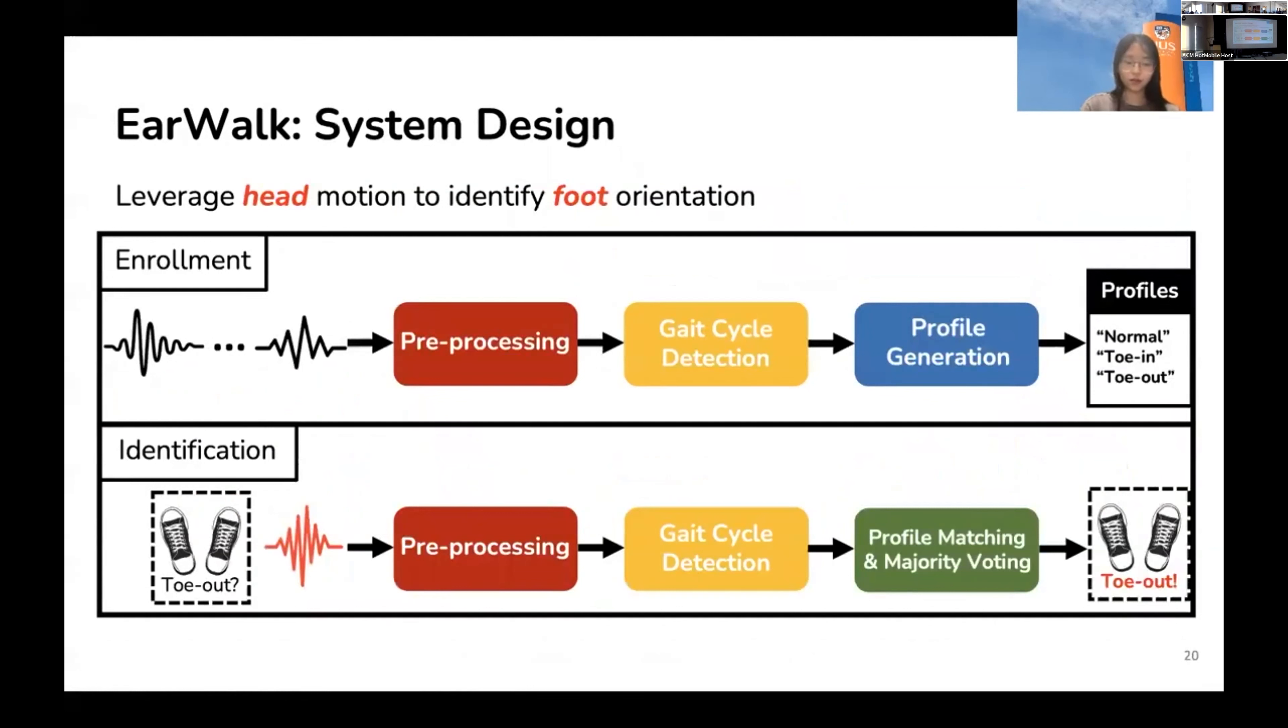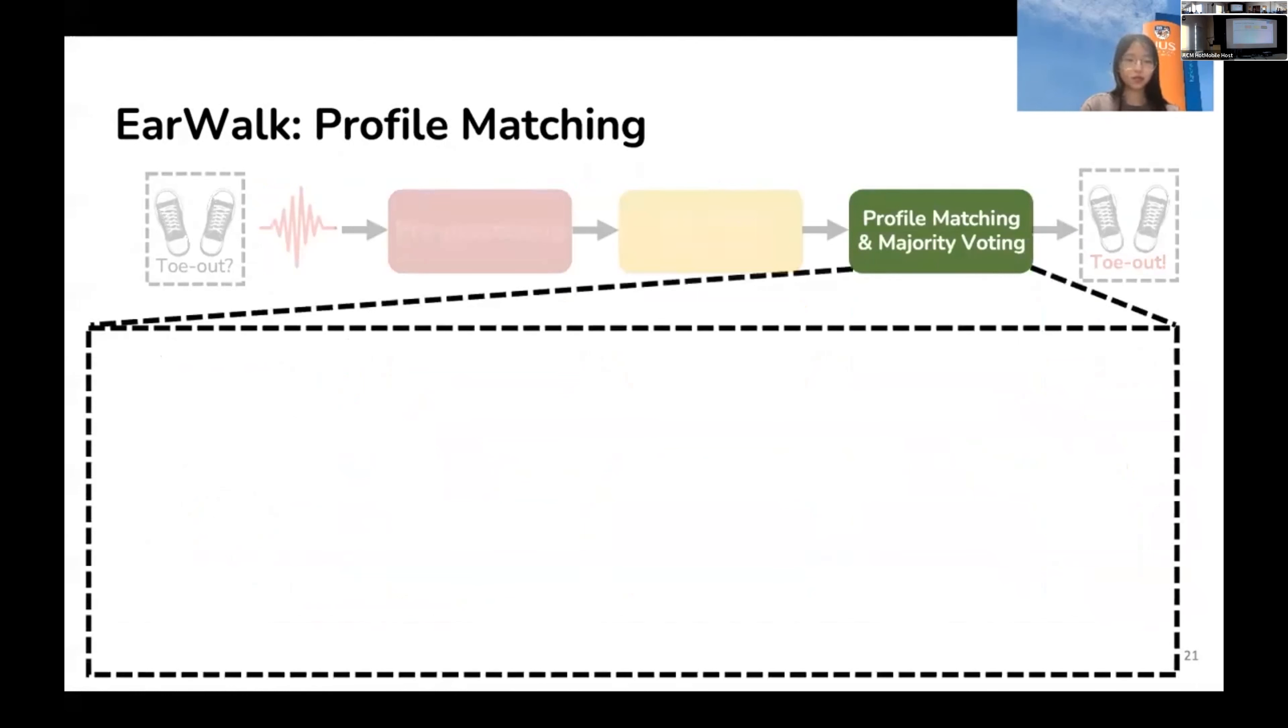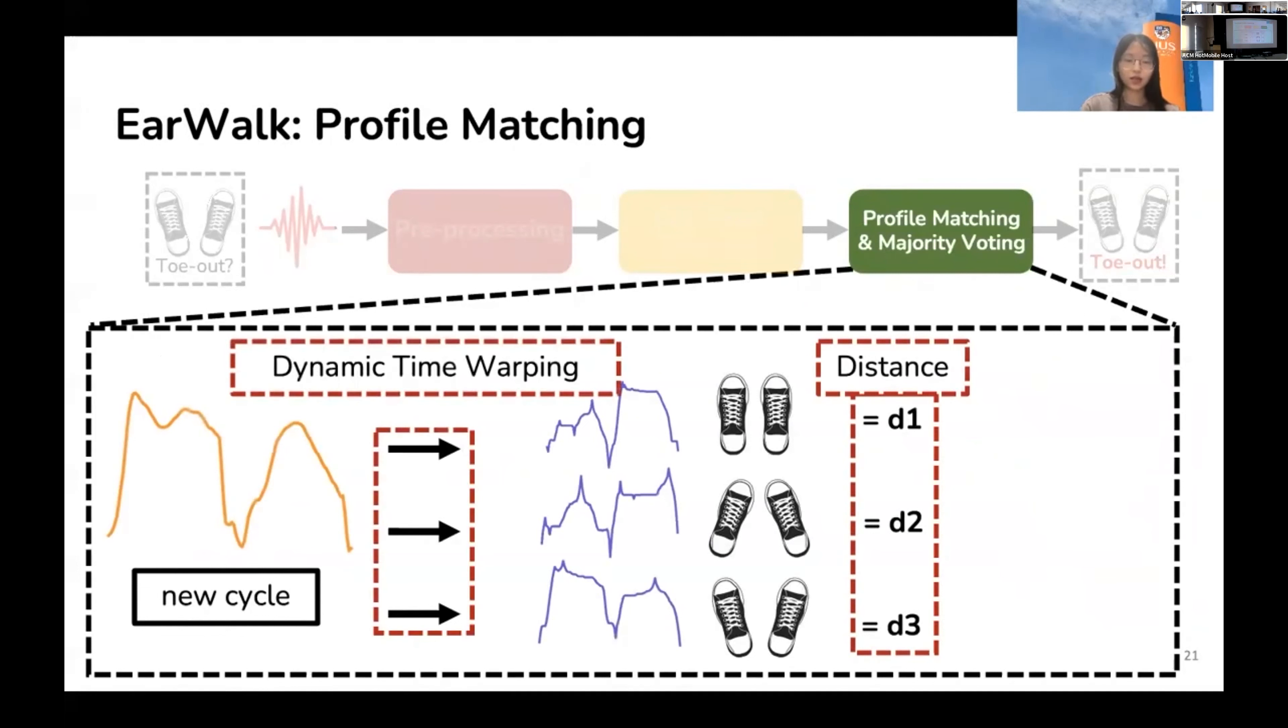Next, I introduce to you the design of the modules in the identification phase. In the identification phase, raw signals still go through the preprocessing and gait cycle detection modules to obtain signal cycles. Then, in the profile matching and majority voting module, we will obtain the identification results for each cycle. In this module, given a new signal cycle and three walking profiles for normal, toe-in, and toe-out postures, we compute the pairwise distance to measure their similarities. The distance is computed using dynamic time-warping algorithm, since generally, cycles and profiles are of unequal length. Finally, if D3 is the smallest, then we know that this cycle is closest to toe-out profile and comes from toe-out posture.